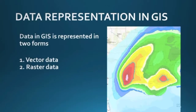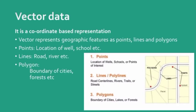After collection, how do we represent this data in GIS? You can represent it in colour formats, and broadly it is divided into two forms: vector data and raster data. Vector data is a coordinate-based representation like we draw on paper, comprising points, lines, shaded areas, boundaries, etc.